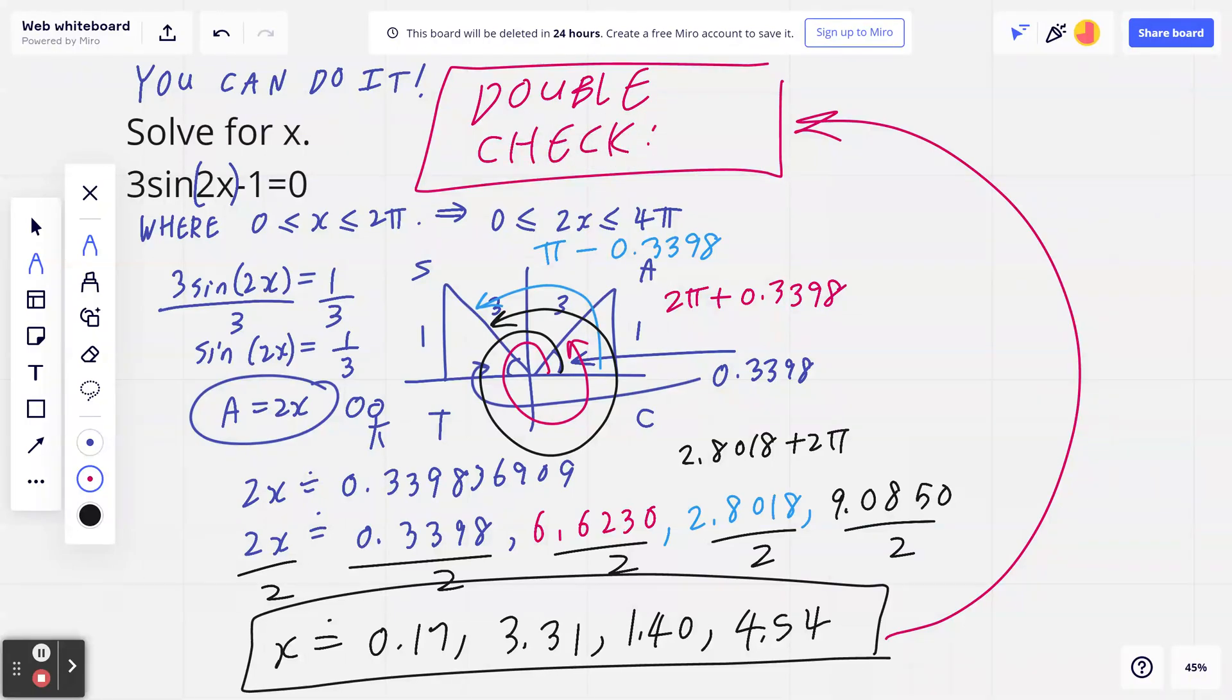So I am going to double check one of them for you. And then the other three, I trust that you can double check in the same manner. So you can take this first number, 0.17, and you plug it back in. So I take 3 sine of 2 times 0.17 minus 1. If I grab the calculator and I press 3 sine in brackets, 2 times 0.17 minus 1, it doesn't give me 0. In the display, I see 0.000461276, which is approximately 0. So very quickly, I already know this answer is correct.